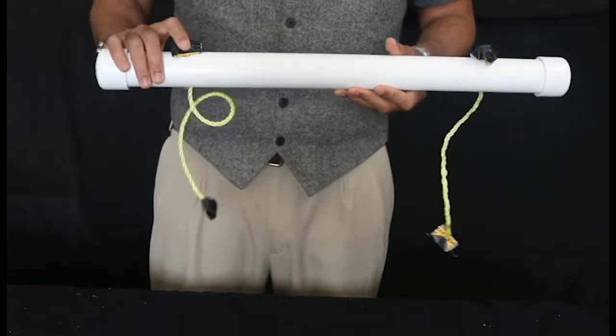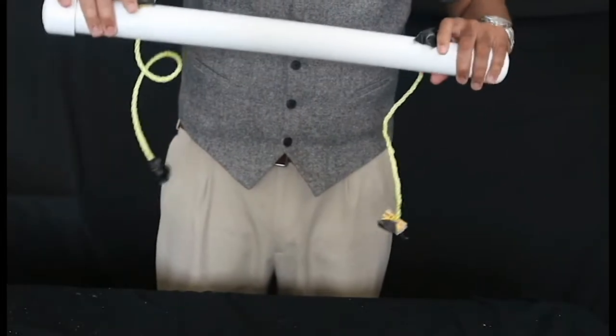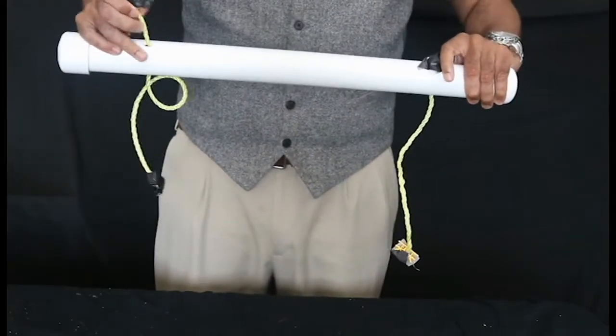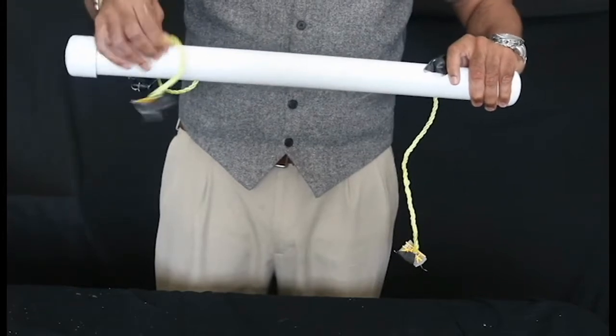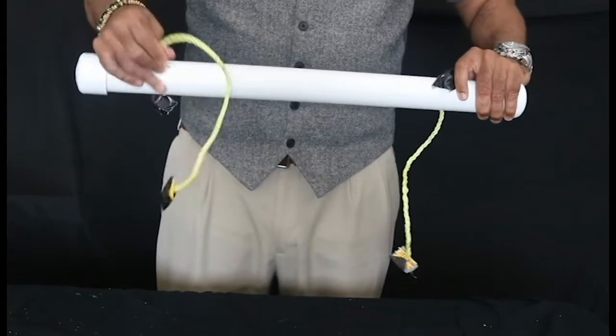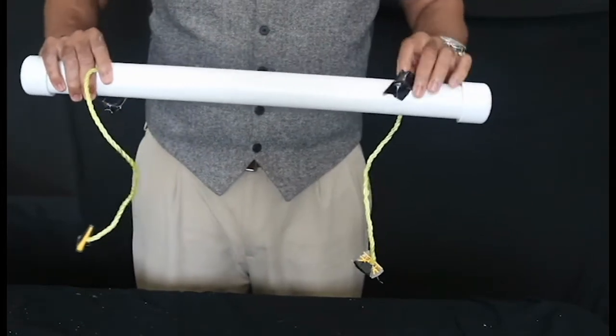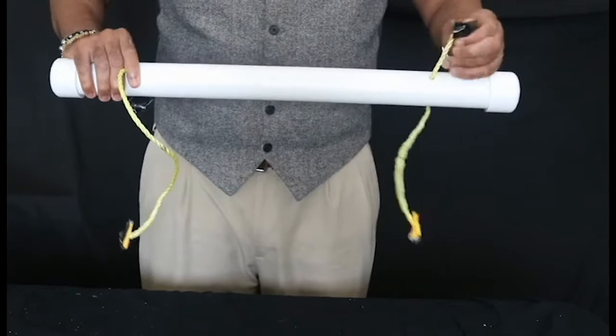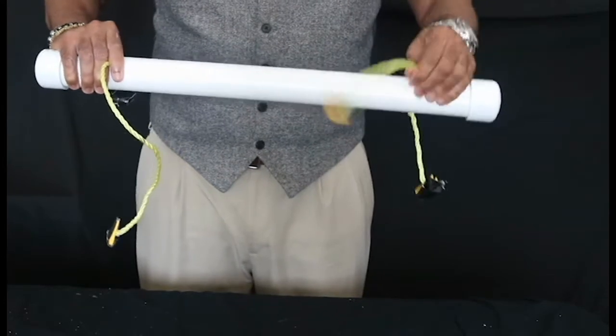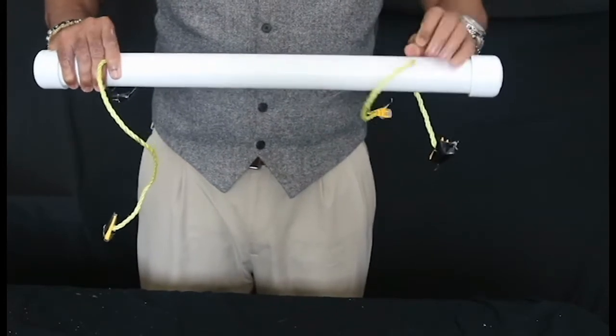With this activity here, the magic tube, you're going to ask your students to see if they can solve this particular project here. As you can see, it's made out of PVC pipe and some nylon rope. And actually tape on the end so the rope doesn't go all the way through.